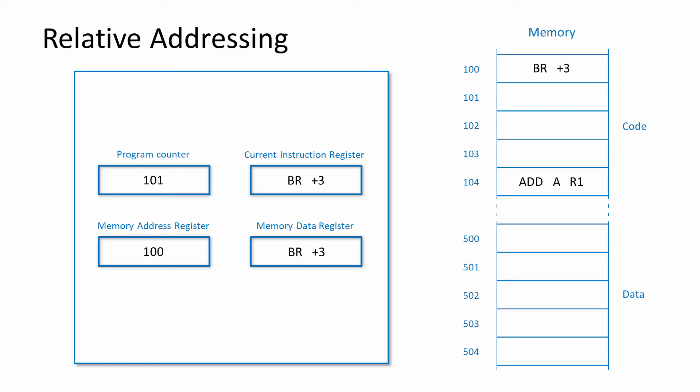With relative addressing, the effective memory address is calculated by taking the operand and adding it to the address in the program counter. In other words, the program counter contains a base address and the operand is an offset to this. The target of a jump, also known as a branching instruction, can be specified relative to the jump instruction itself. An advantage of this is that the jump instruction is independent of its position in memory — a program can be loaded anywhere in the memory when it starts, without the need to adjust the addresses of jump instructions.